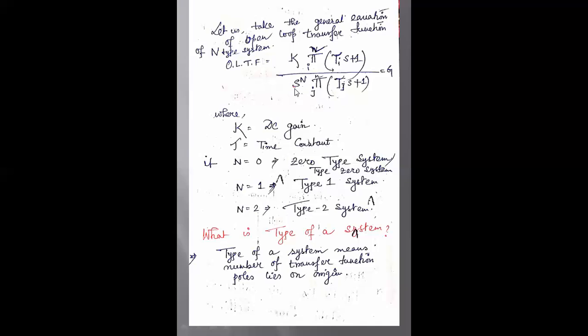If n equals 0, this is called a type 0 system. If n equals 1, it is a type 1 system. If n equals 2, it is called a type 2 system. The type of a system is determined by the number of transfer function poles that lie on the origin.